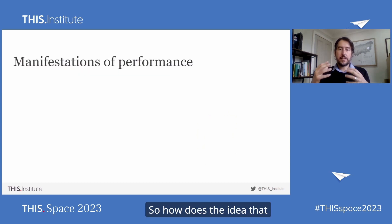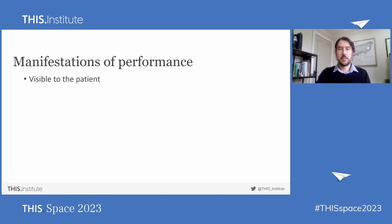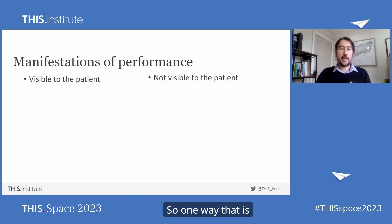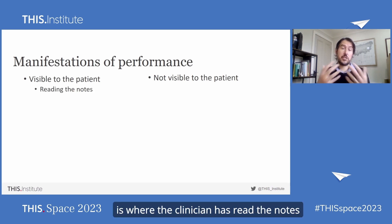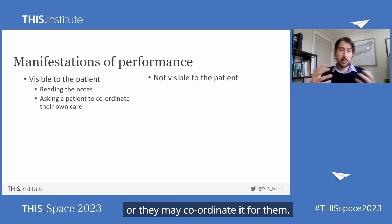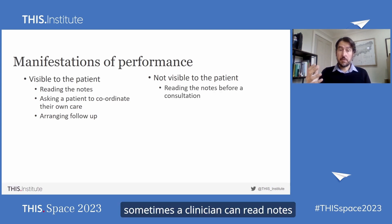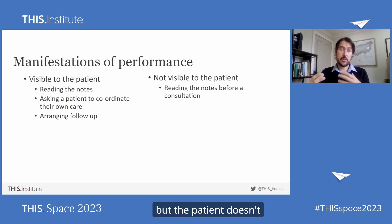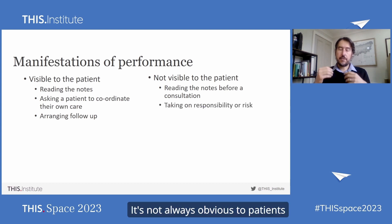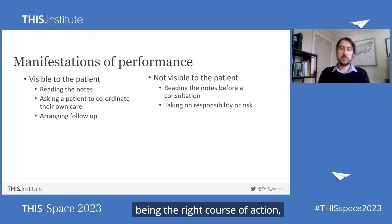How does the idea that clinicians behave differently and perform continuity differently manifest itself? It manifests in two ways — ways that are visible to the patient and ways that are not. One way visible to the patient is where the clinician has read the notes either in front of the patient or beforehand. They may ask a patient to coordinate their own care or may coordinate it for them. They may arrange follow-up within the service, or say you need to go back to your GP. In ways not visible to patients, a clinician can read notes before a consultation and be aware of issues without the patient knowing. It's not always obvious to patients where clinicians are taking on board responsibility and risk, because they can dress up what they do as reasonable — where actually there are multiple acceptable courses of action and they've potentially taken the easier one.